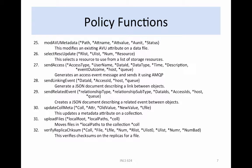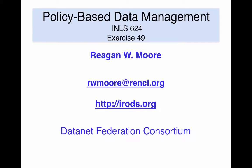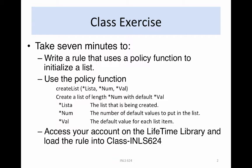Examples of the use of each policy function can be found in the Policy Examples Workbook. Take seven minutes to complete exercise 49: write a rule using a policy function to initialize a list. Use the policy function create_list(star_list_a, star_num, star_val), which creates a list of star_num links with default value star_val. Star_list_a is the list being created, star_num is the number of default values, and star_val is the default value for each list item.